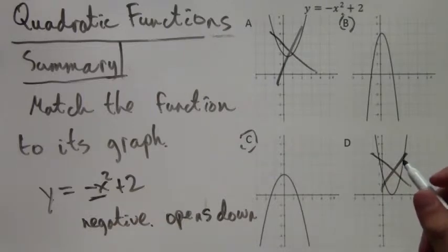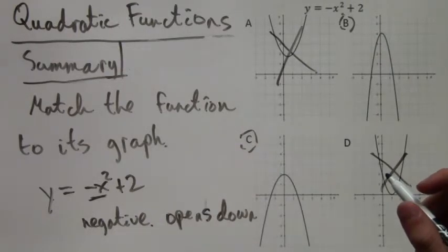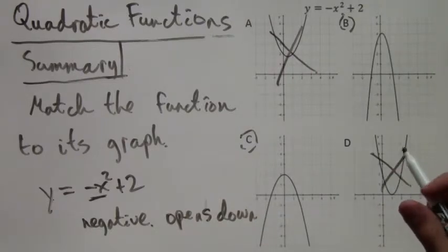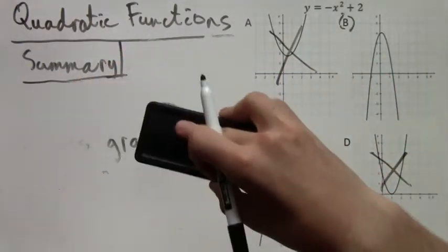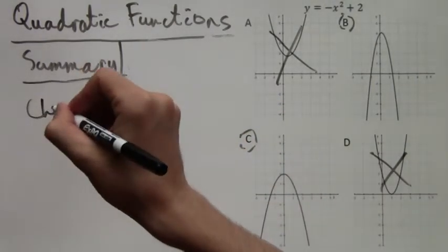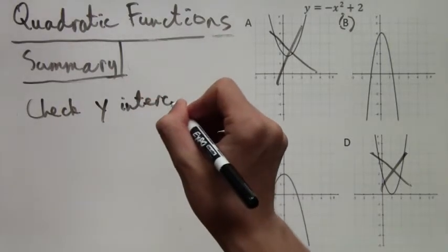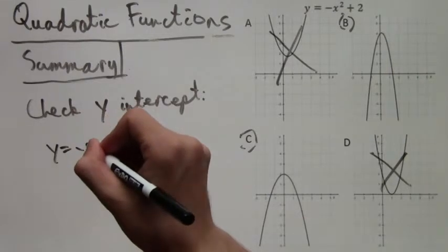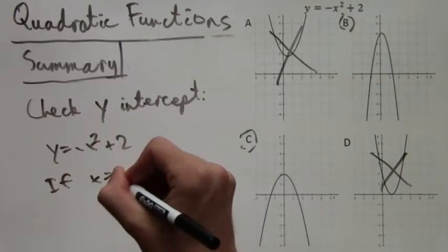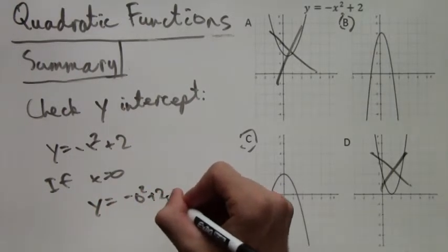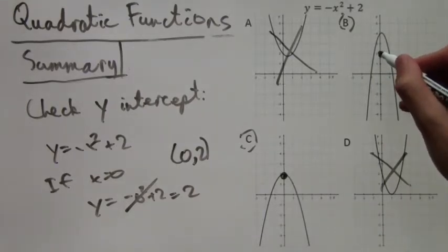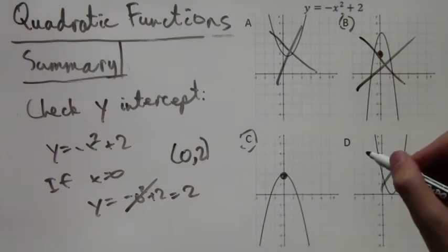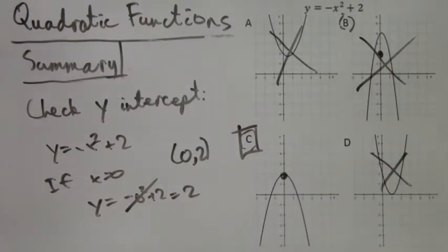So how do we determine which one of B or C is the right answer? Well we can do the same thing with the y-intercepts. That is what is the y-intercept of the function given, y equals negative x squared plus 2? If we plug in x equals 0 we'll just get 2. Y equals 2. So this point must lie on the graph of this parabola of this function. And here I have marked (0,2) on both of these graphs. But look it's not on the parabola on answer choice B and it is on answer choice C. So answer choice C is the correct answer.